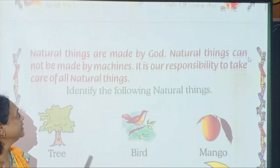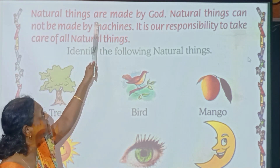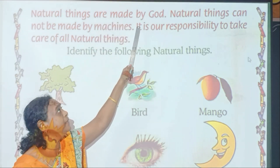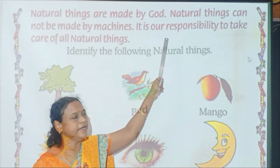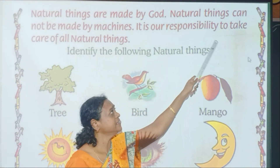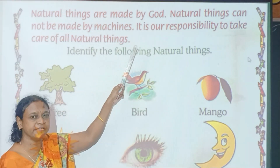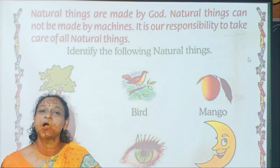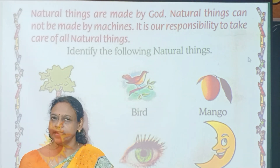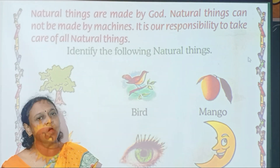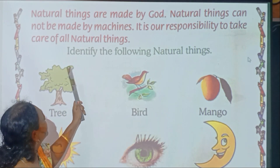Next will be natural things. Natural things are made by God. Natural things cannot be made by machines. Trees, mountains, sun, moon — we cannot make them. That is made by God. So they are known as natural things.